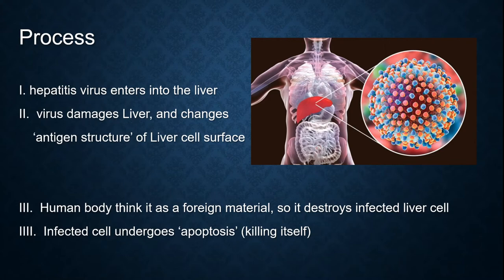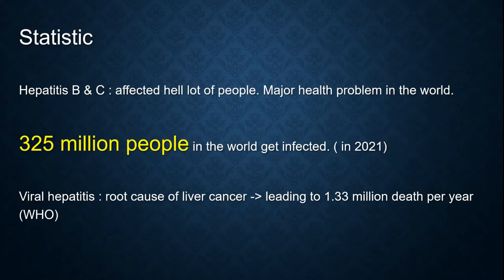The infected cell undergoes apoptosis. For the statistics, hepatitis B and C affect a large number of people and are a major health problem worldwide. 325 million people in the world are currently infected. Viral hepatitis is the root cause of liver cancer, leading to more than 1 million deaths per year.